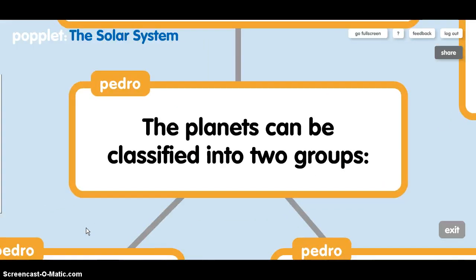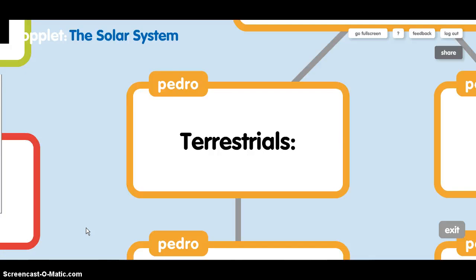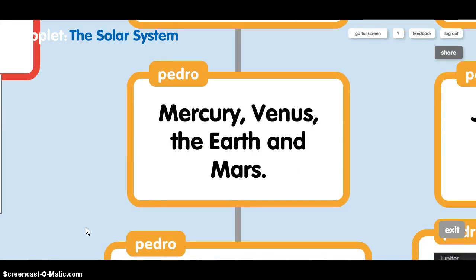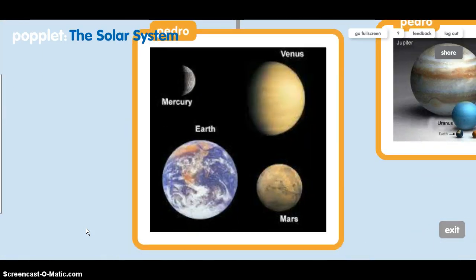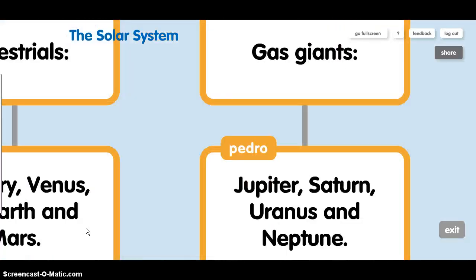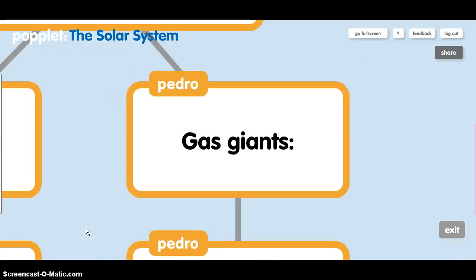The planets can be classified into two groups. Terrestrials: Mercury, Venus, the Earth, and Mars. These are terrestrial planets.